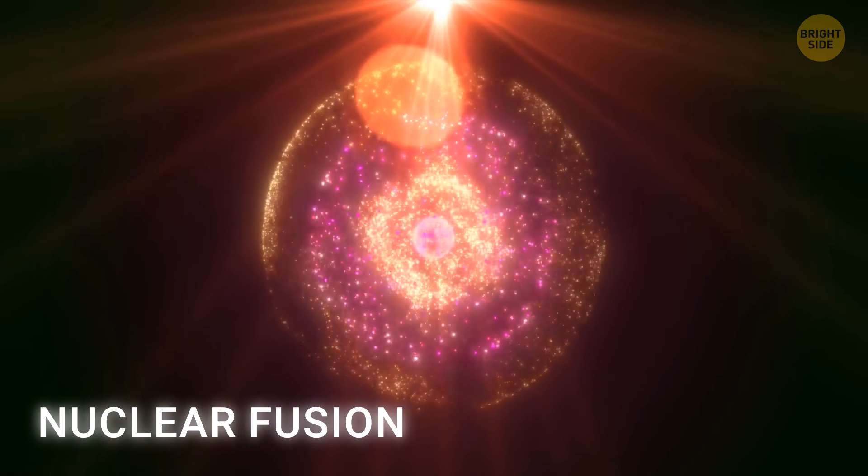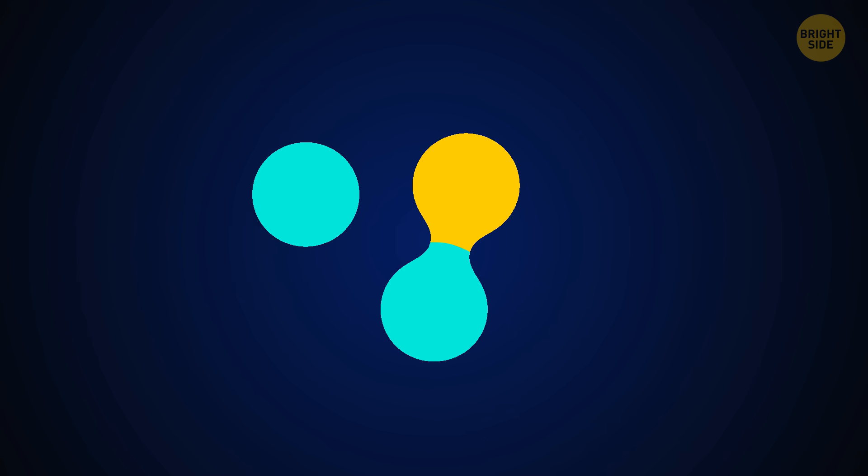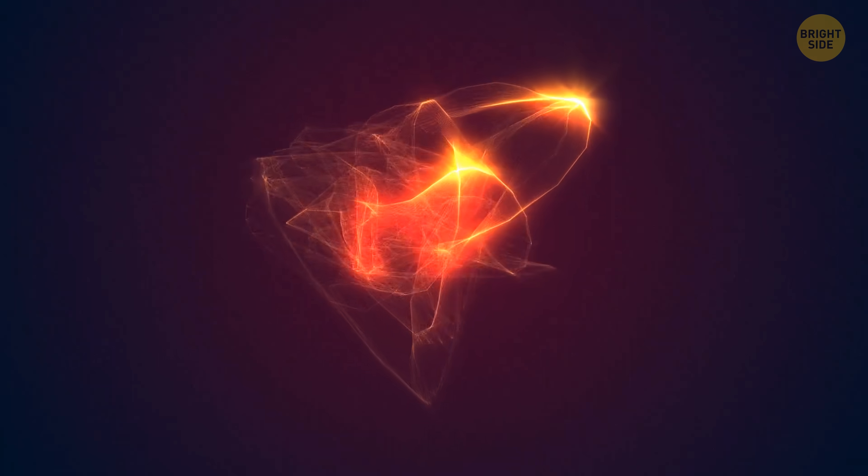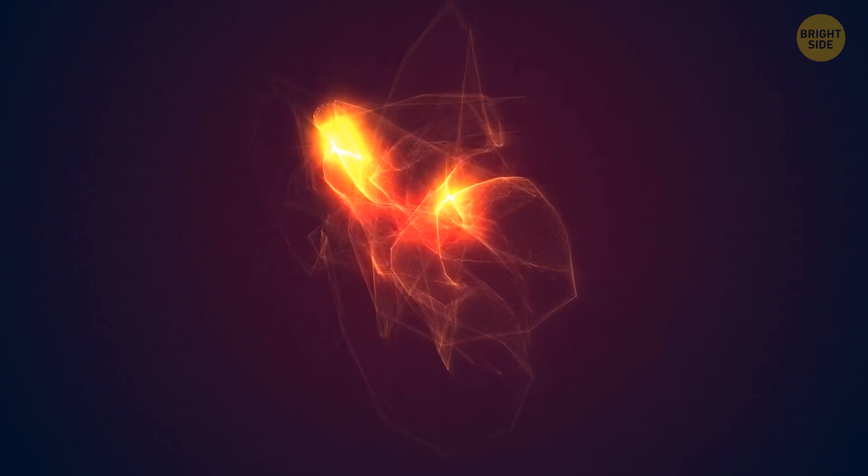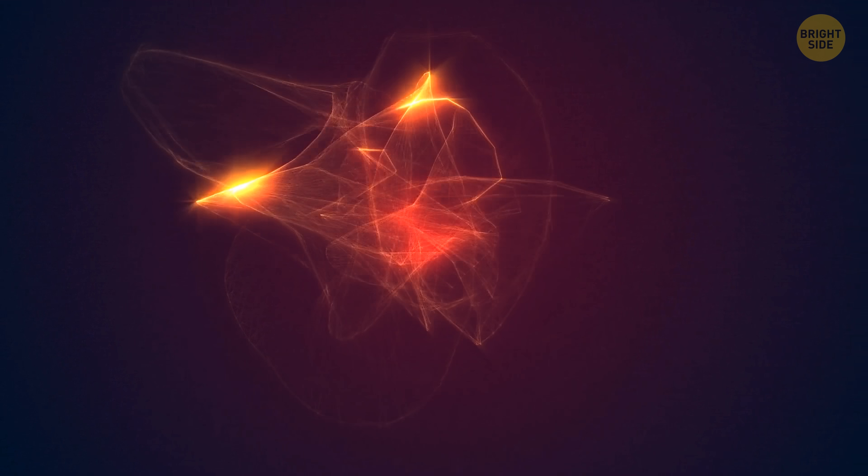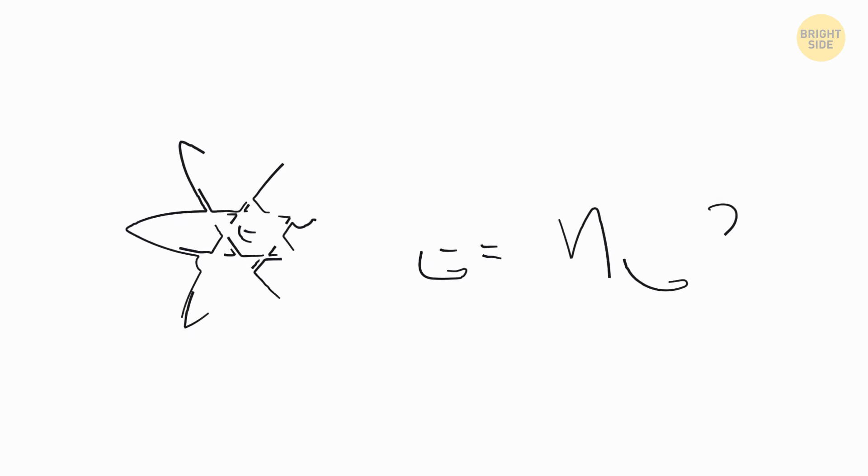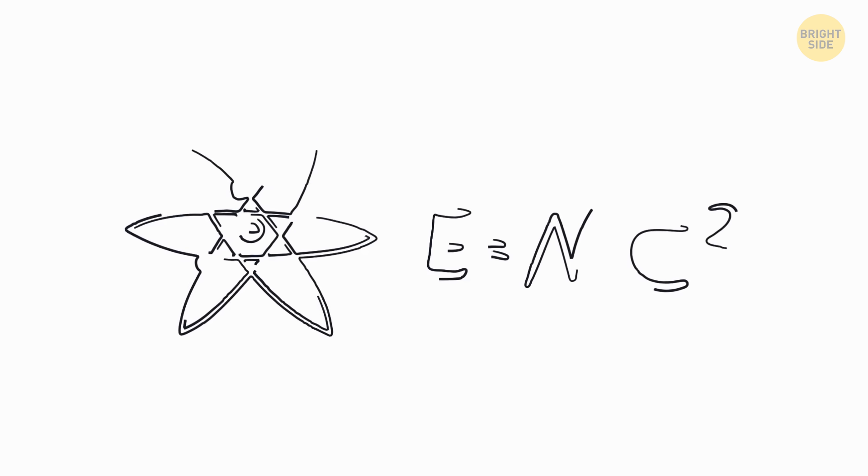And in this fusion fiesta, the hydrogen atoms combine to form helium atoms, a chemistry experiment on a grand scale. During this nuclear fusion, a teeny bit of mass from the hydrogen atoms is transformed into a massive amount of energy. It's Einstein's famous equation, E equals mc squared, coming into play.